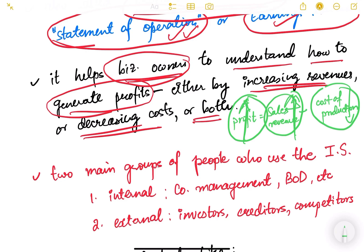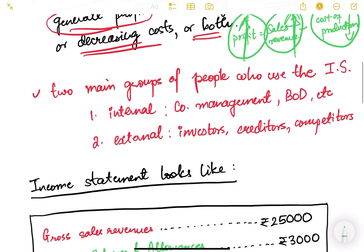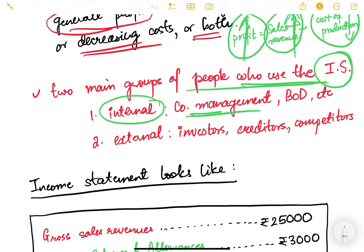There are two main groups of people who use the income statement. The first group is the internal group - meaning company management, board of directors, etc. These are the internal people who use it to devise their strategy as to how to increase revenue and increase profits.